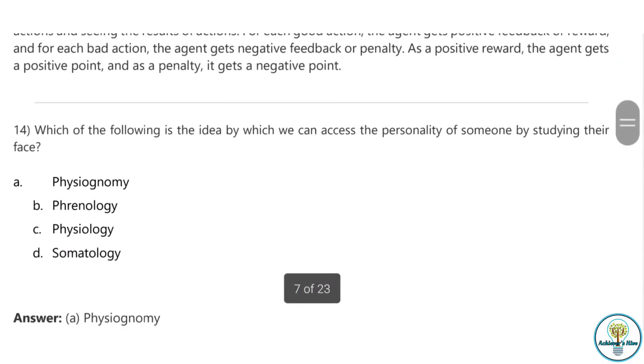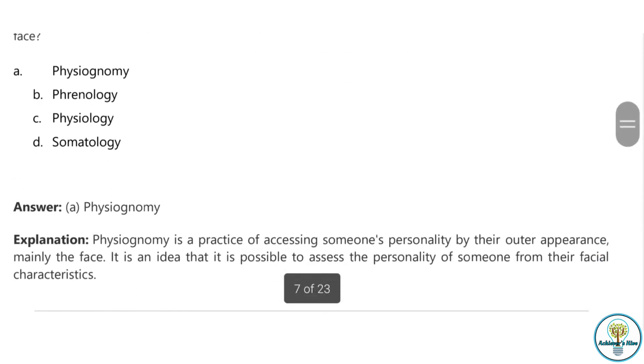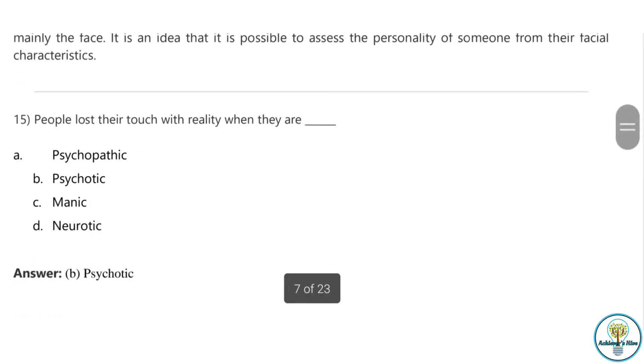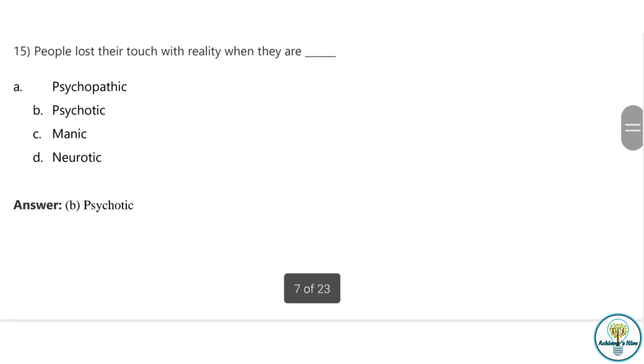Question fourteen: Which of the following is the idea by which we can access the personality of someone by studying their face? Physiognomy is the correct answer. It is an idea that is possible to assess the personality of someone from their facial characteristics. Question fifteen: People lost their touch with reality when they are psychotic. Psychotic is the correct answer.